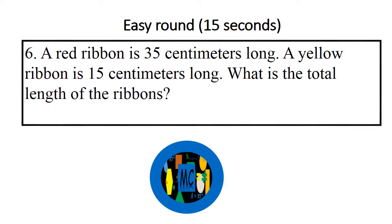Question 6: A red ribbon is 35 centimeters long. A yellow ribbon is 15 centimeters long. What is the total length of the ribbons?